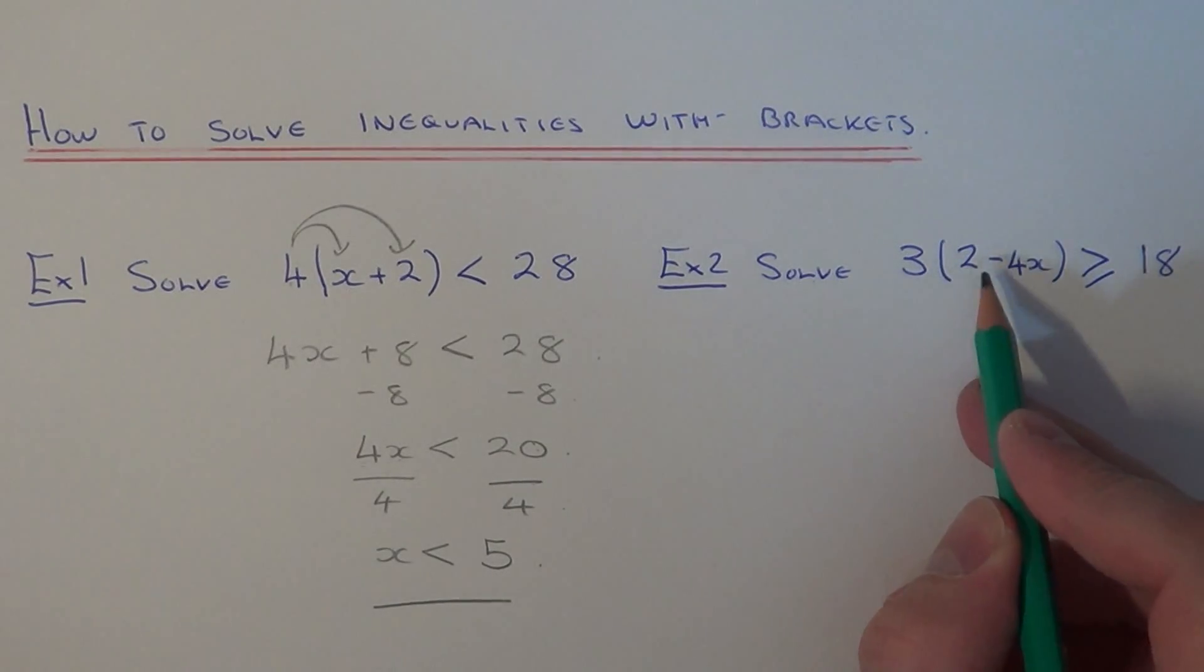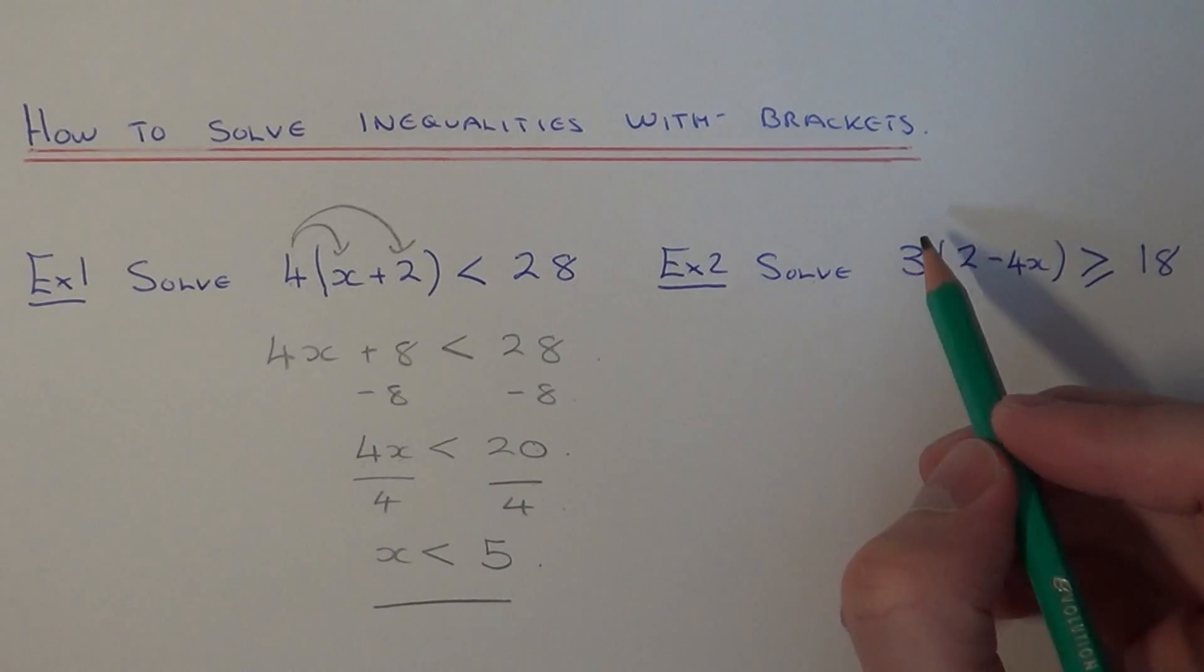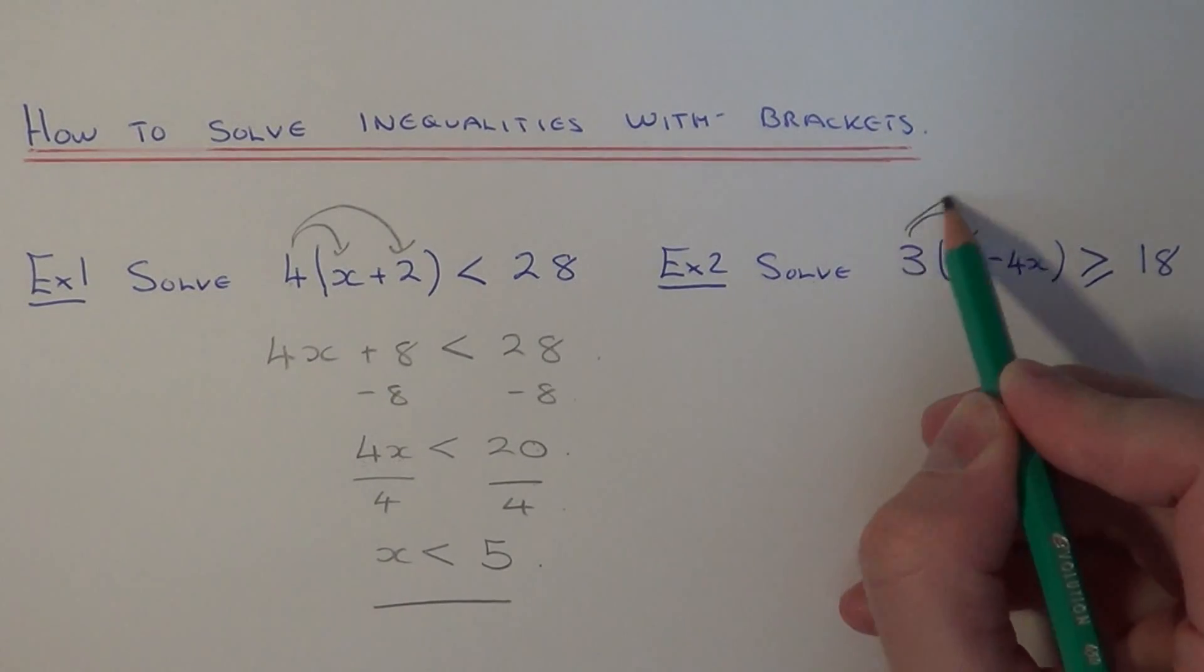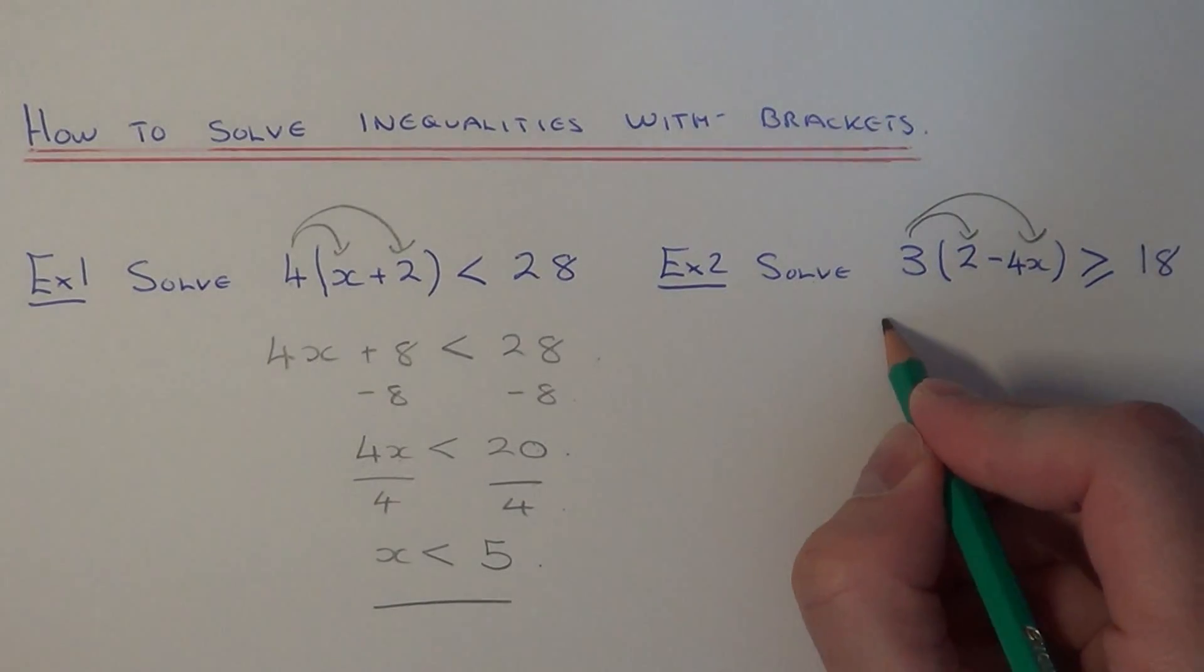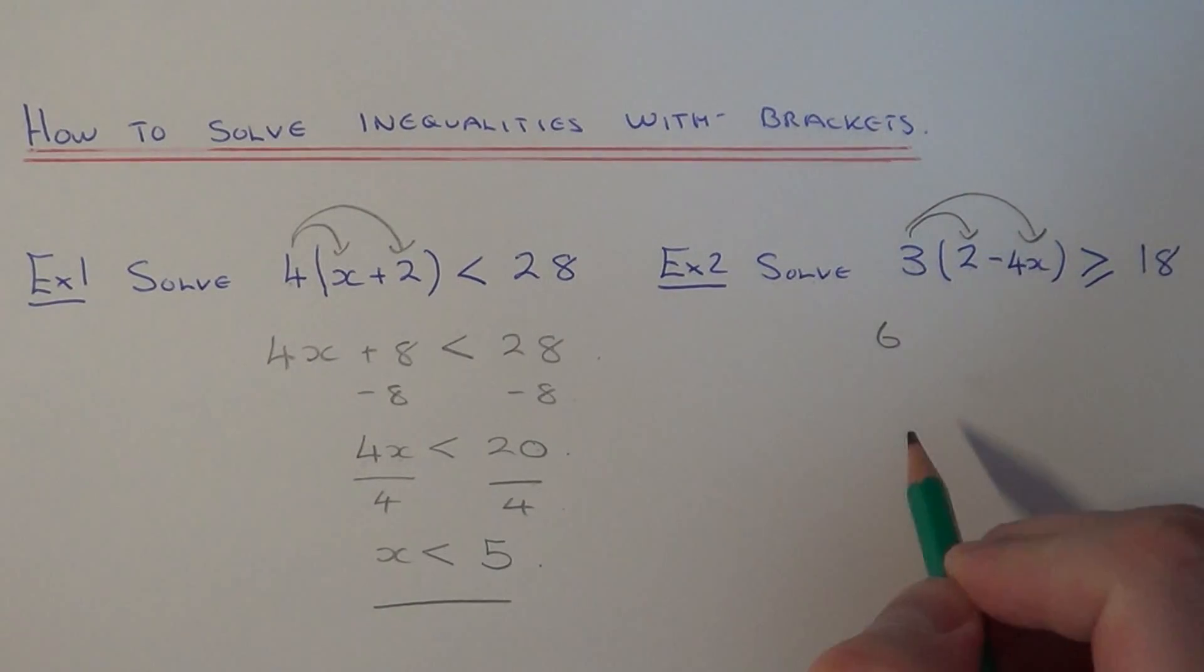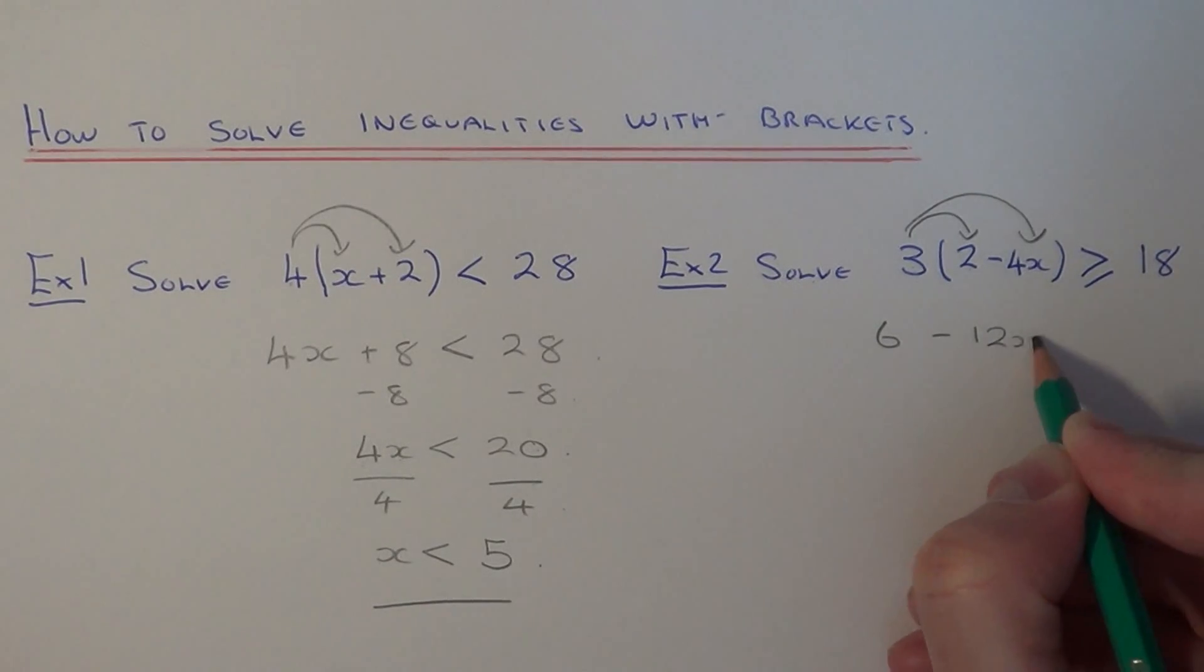This time we've got 3 bracket 2 minus 4x is more than or equal to 18. So again expand the bracket on the left hand side. So 3 times 2 is 6, 3 multiplied by negative 4x is minus 12x, and that is more than or equal to 18.